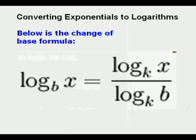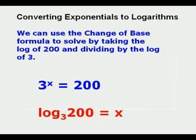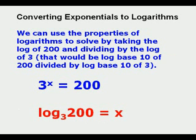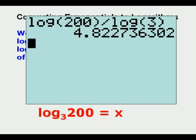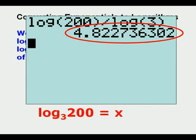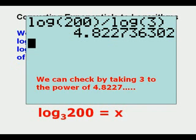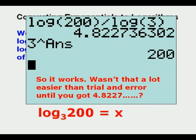And here is the change of base formula. That means if you have a log of a certain base of x in this instance, you can convert it by taking the log of what you're taking the log of to a certain base by the log of the base to the new base. And so we can use that change base formula. We take log of 200 and divide it by the log of 3. That would be log base 10 of 200 divided by log base 10 of 3. And here in our calculator, we do that, we get 4.82. And we can check our answer by taking 3 to that power, and we do indeed get 200. Worked out a lot better than getting really old, didn't it?